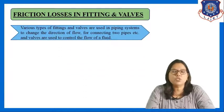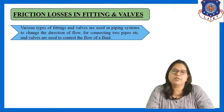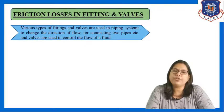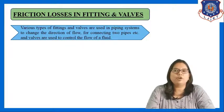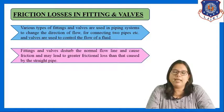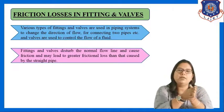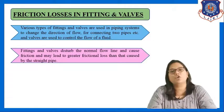Various types of fittings and valves are used in piping systems to change the direction of flow, for connecting two pipes, etc. Valves are generally used to control the flow. Fittings and valves disturb the normal flow line and cause friction, and may lead to greater frictional loss than that caused by a straight pipe. A pipe including fittings and valves will have more friction losses compared to a straight pipe.